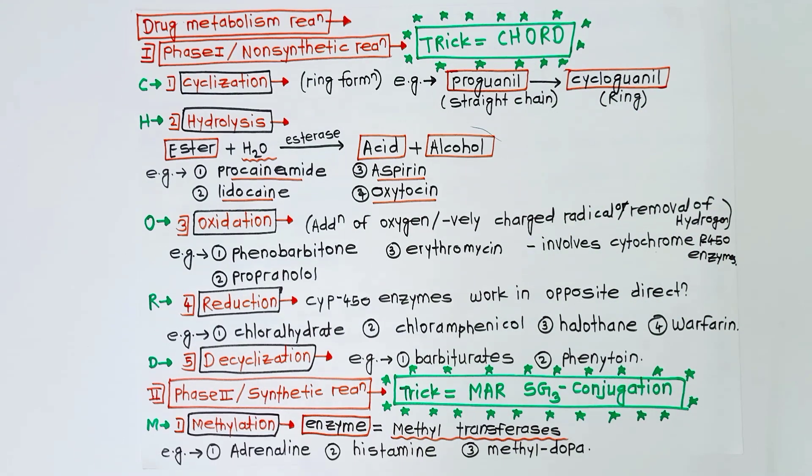Next is phase 2 reactions or synthetic reactions. The question is the same: explain reactions and their examples. First of all, the trick is MARO SG3 conjugation.